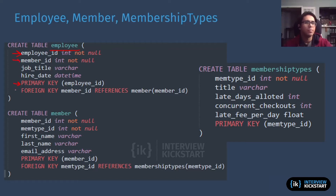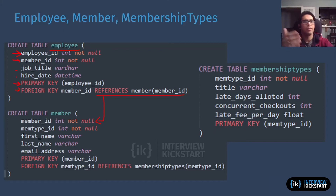Then we have member ID, which is going to be our foreign key. The foreign key referential integrity is notated here, where it's going to refer to the primary key of member. That's how you would join those two tables when they're going to be used. Besides that, in the employee table you just have other attributes like job title and hire date — just some other attributes that might be needed for employee. And if you're looking at the schema on the side, you can see how we've gotten everything.